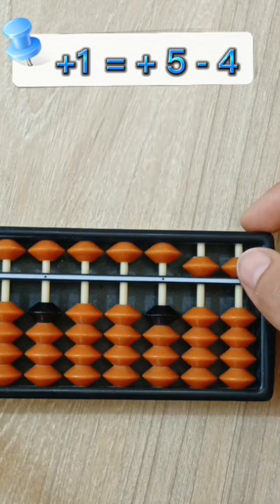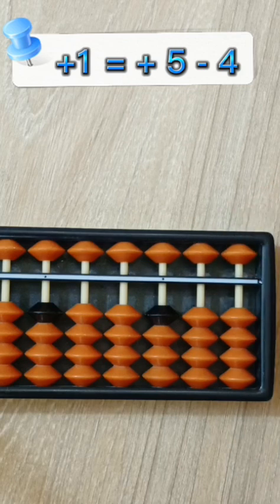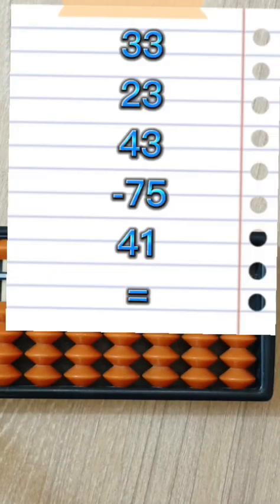Okay. Here's your homework. 33, 23, 43, minus 75, 41, equals. I'm waiting for your answer. Thank you. Goodbye.